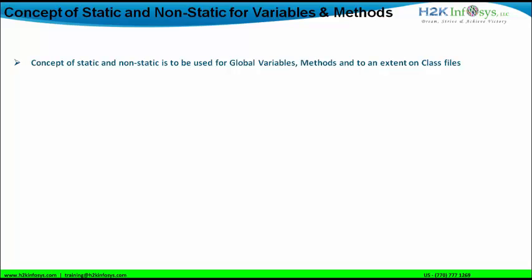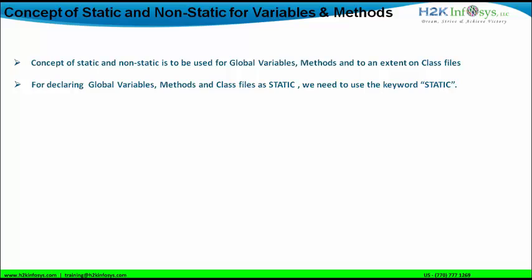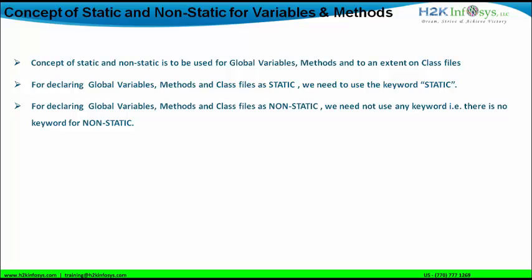Global variables can also be static and non-static. For declaring global variables, methods, or class files as static, we need to use the keyword called static. If you want to declare a global variable, method, or class file as non-static, we need not have any keyword for it. Non-static does not have any keyword — if we do not write the keyword static, automatically that particular global variable, method, or class file is non-static.